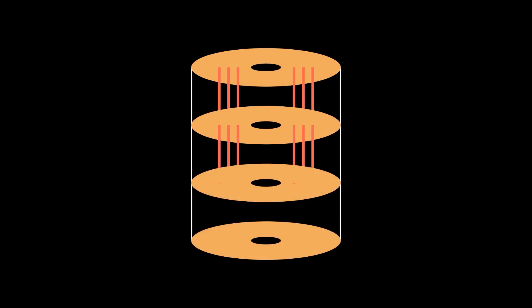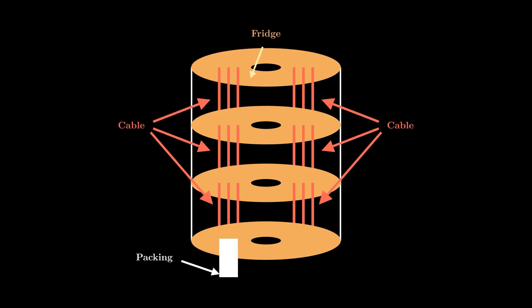These cables, which span all the way down to the quantum chip, are usually found in bundles together and span between the plates of the dilution refrigerator. These wires need to have some specific properties.